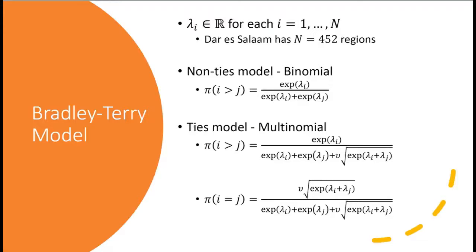Dar es Salaam has been split up into 452 different regions — little areas that we use to compare against each other. Each one of these regions is given a parameter value which I denote lambda_i. You can think of these values as a 'niceness' value: a larger value means that area is nicer than a different area which has a smaller lambda value. We can use these lambda values to build models.